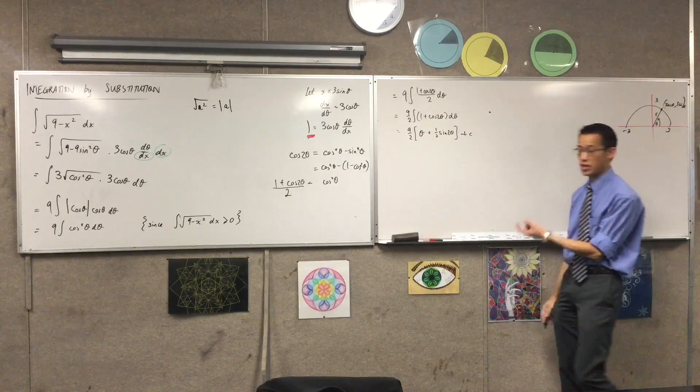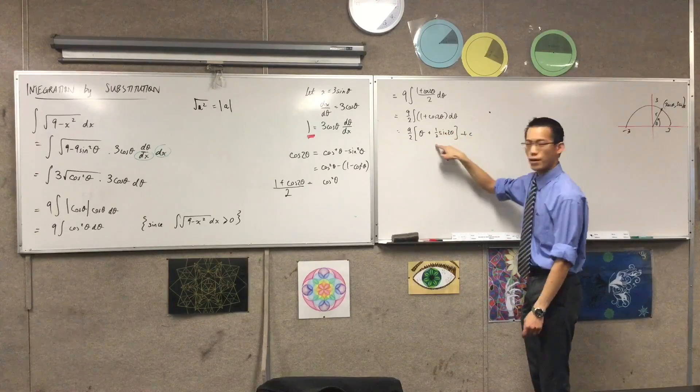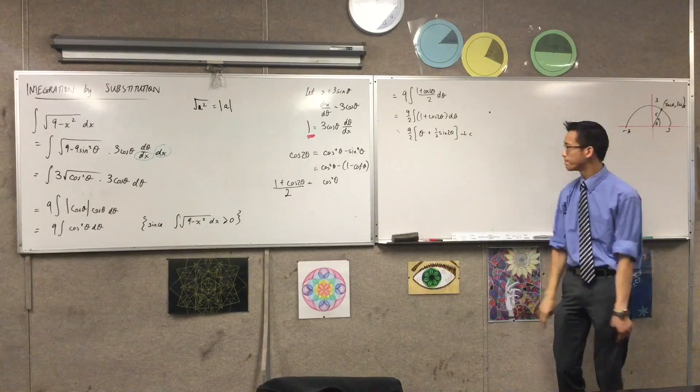And you just mentally check. If I differentiate this, will I get back to cos 2 theta? The 2 will come out the front, cancel with a half, sine becomes cosine. Looks good.